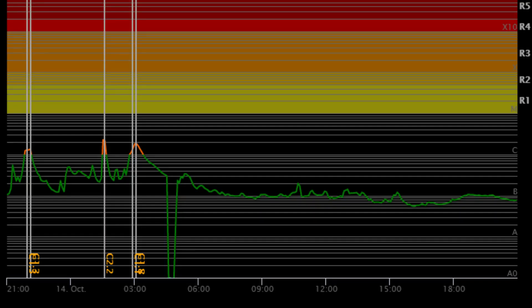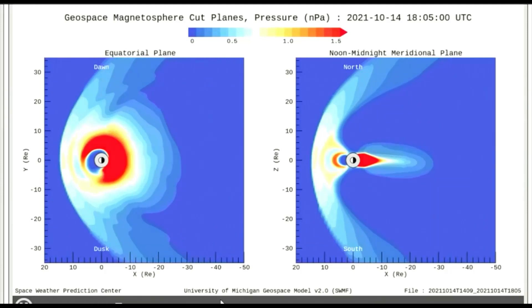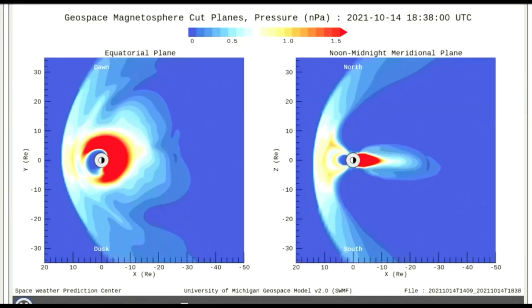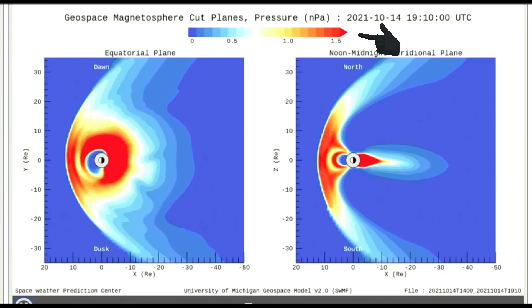Shown on this flare classification chart, there have been four C-class flares in the last 24 hours. This model shows today's solar pressure activity on the geomagnetosphere. Looking at the gauge top left, the intensity was high in the red.